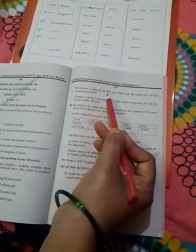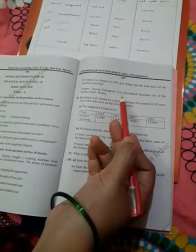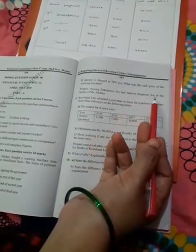Next adjustments: If interest is charged at 10% per annum, what was the cash price of the washing machine? Prepare Anuraga Enterprises Account and Interest Suspense Account in the books of Mr. Akshay.